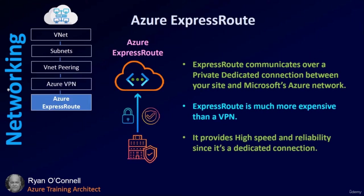Azure ExpressRoute communicates over a private dedicated connection between your site and Microsoft's Azure network. ExpressRoute is much more expensive than a VPN, but provides high availability and reliability since it's a dedicated connection. You need to decide whether to use a VPN or ExpressRoute depending on your budget.